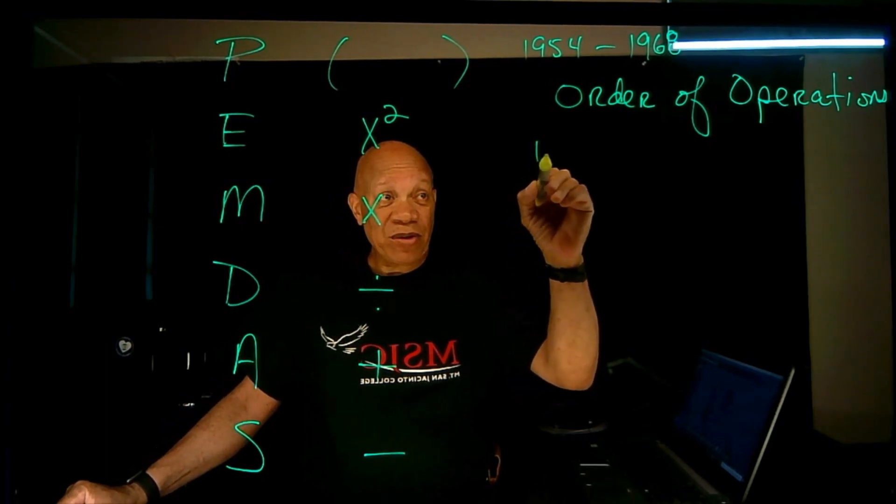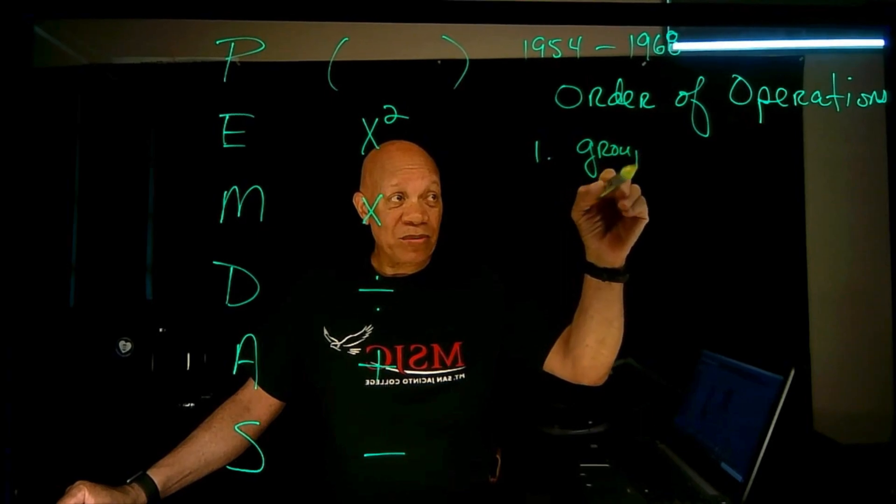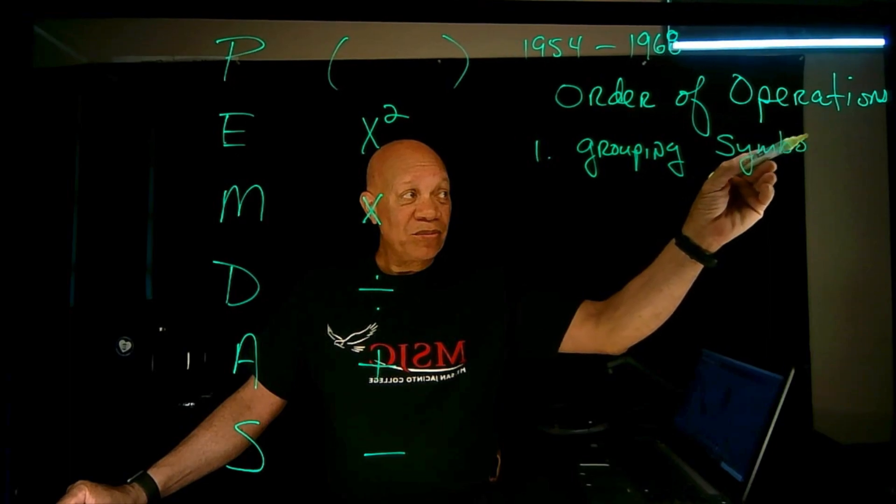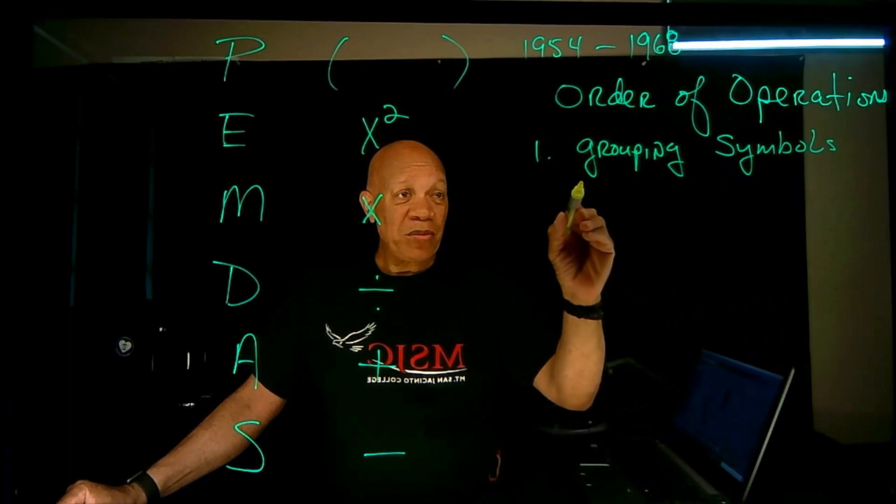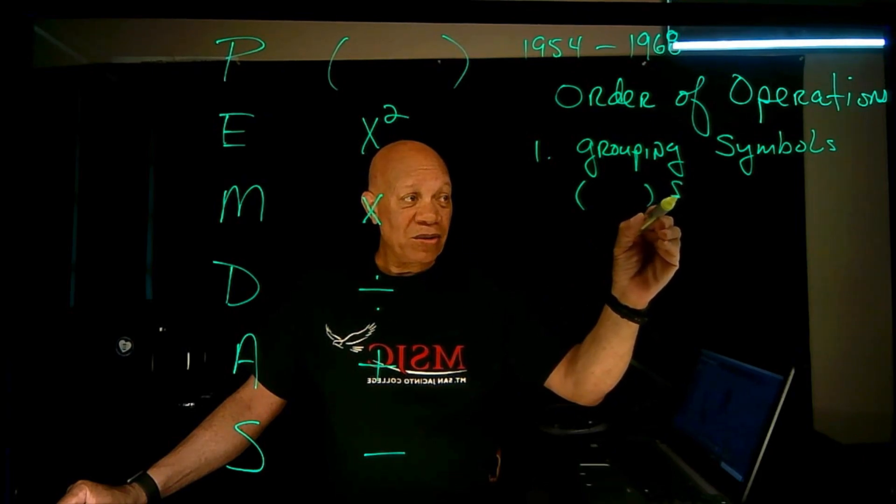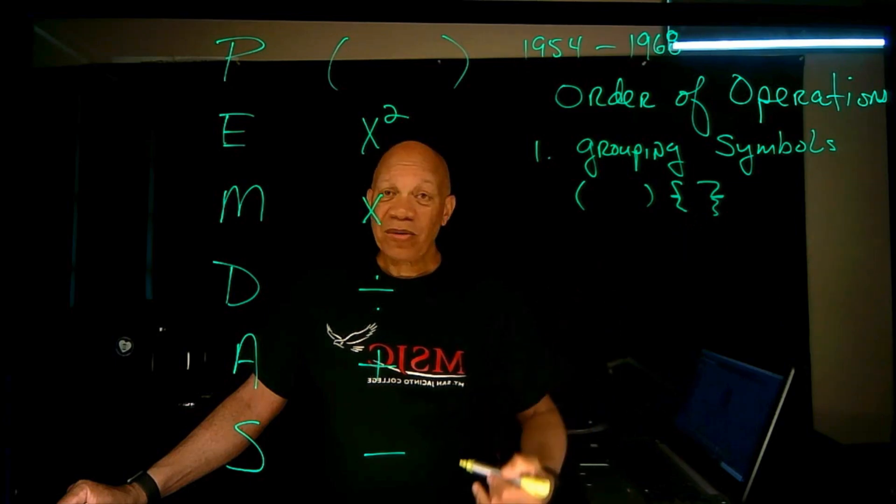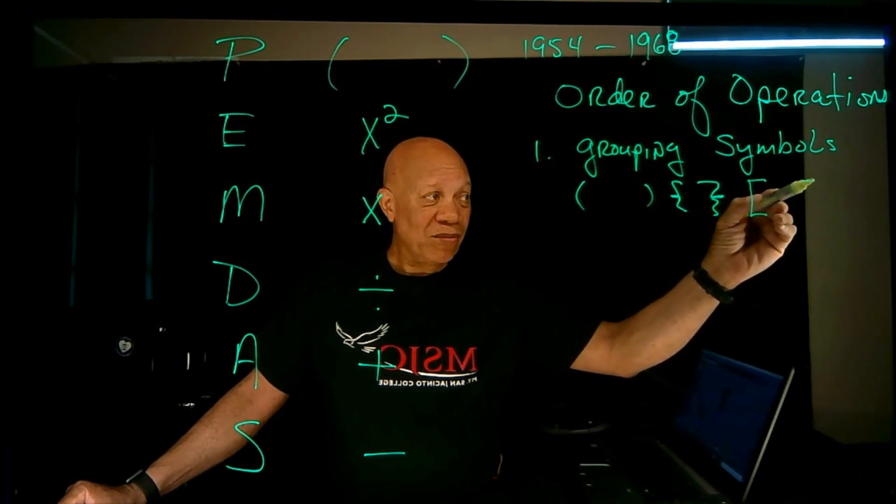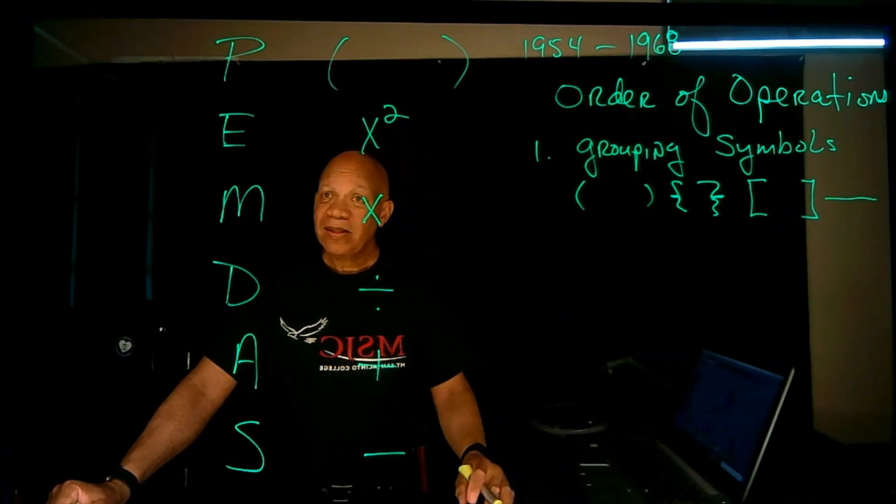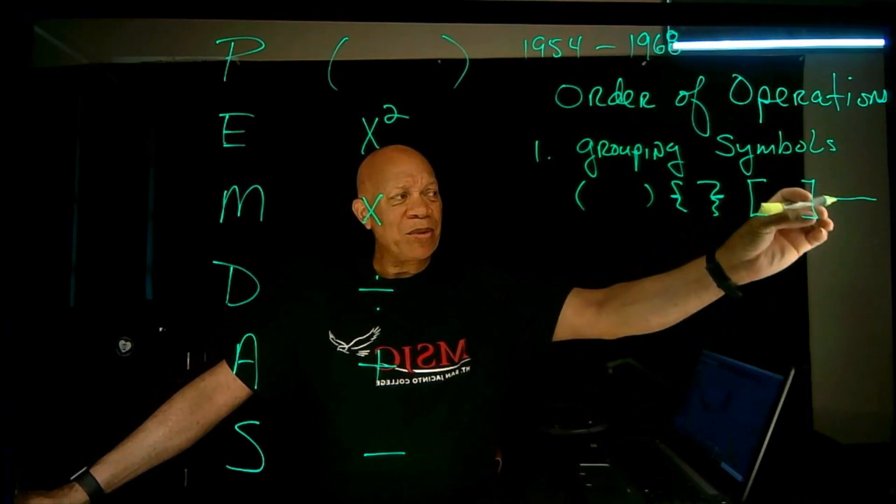I was told that the first thing you're going to do is anything in grouping symbols. Grouping symbols they told me were parentheses, it could be these little curly wiggies, it could be brackets, it can actually be a fraction bar because you group things on the top and group things in the bottom.